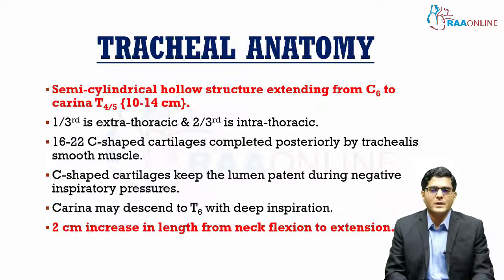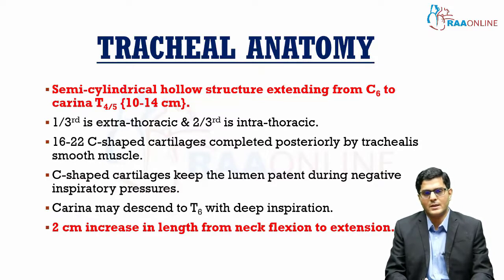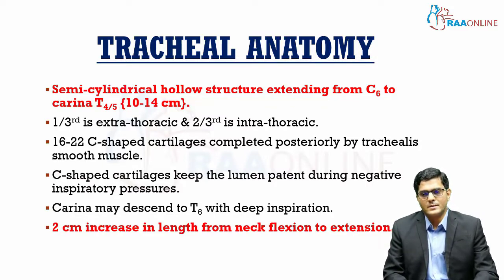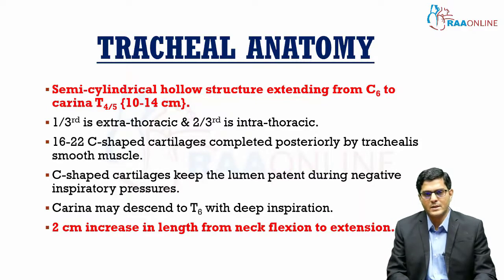Before we get into TRR per se, let's look at the tracheal anatomy. The trachea is a semi-cylindrical hollow structure extending from C6 to the carina at T4 or T5, and it's usually 10 to 14 centimetres in length. One third of this trachea is extrathoracic — above the sternal notch — and two thirds is intrathoracic, below the sternal notch. It consists of 16 to 22 C-shaped cartilages completed posteriorly by the tracheal smooth muscle.